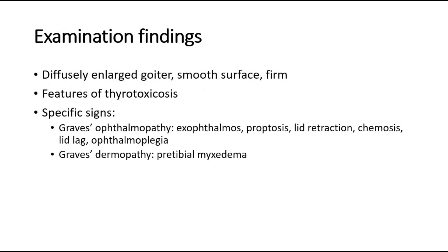On physical examination of the thyroid, these are some of the expected findings for Graves' disease. The expected findings would be a diffusely enlarged goiter with a smooth surface and firm consistency.